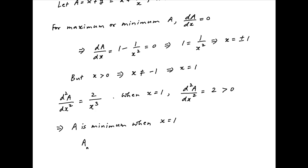At x is equal to 1, the minimum value of a is equal to x plus 1 upon x when x is equal to 1, which is equal to 1 plus 1 equal to 2, which is the required answer.